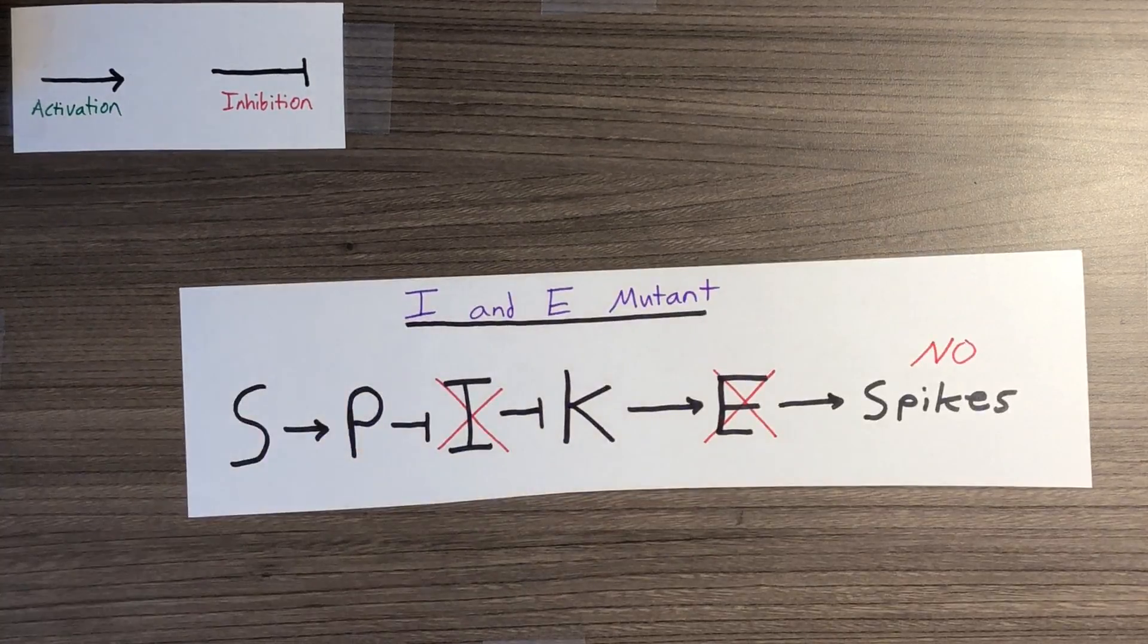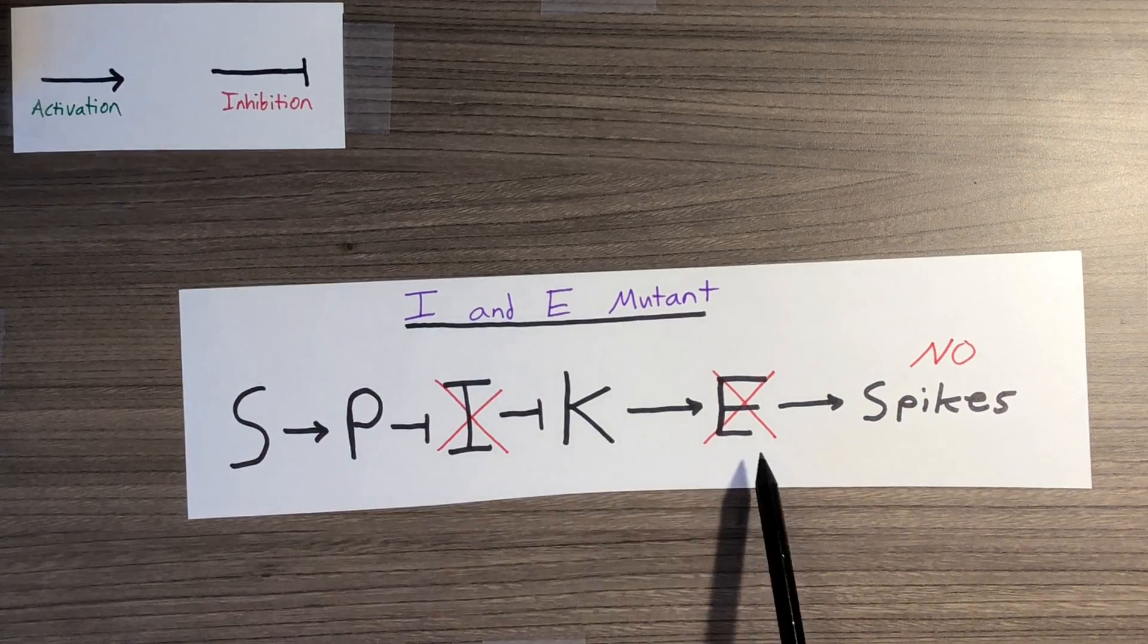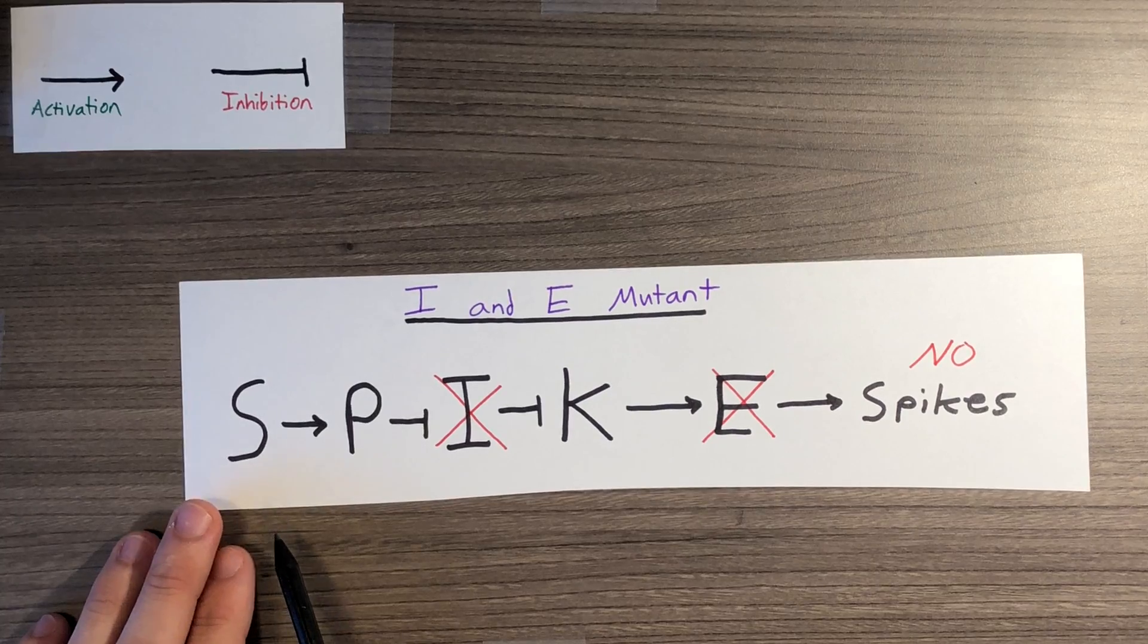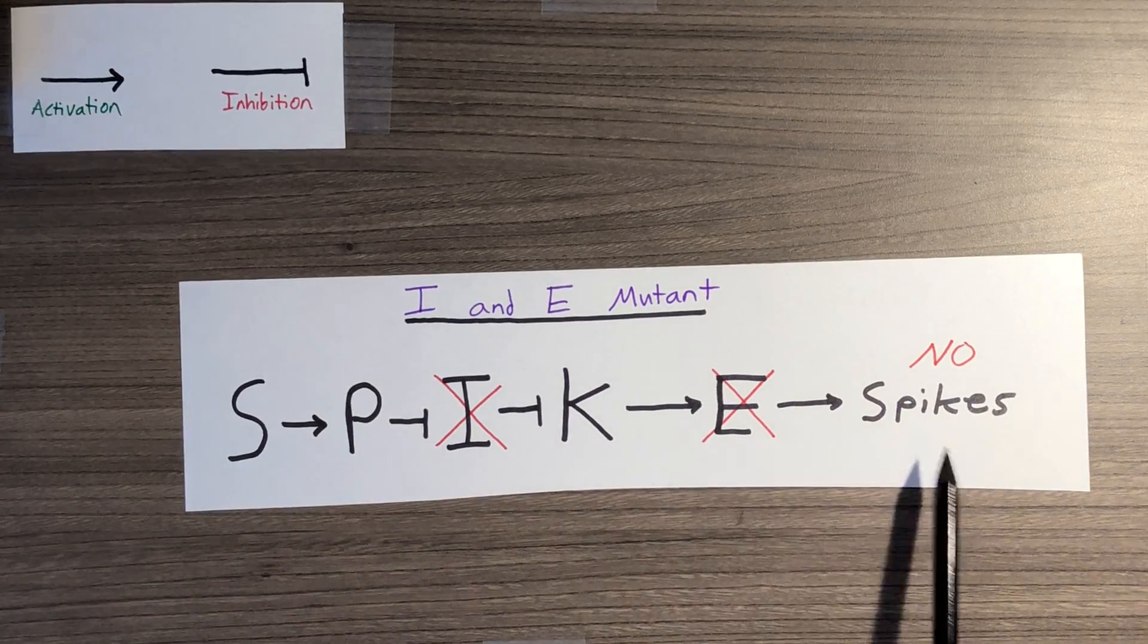This next mutant is a double mutant cell that does not produce I or E. Since E is later than I in the network, anything that shows up before E doesn't matter, and since we don't have E, the skin cells will not produce spikes.